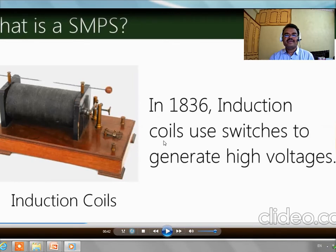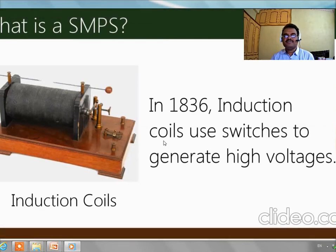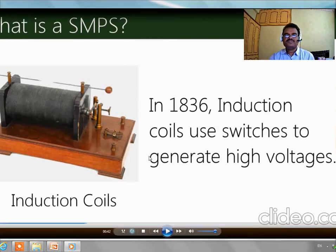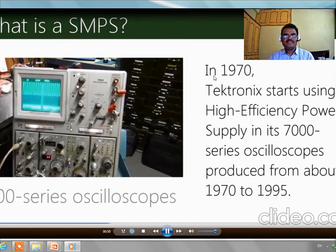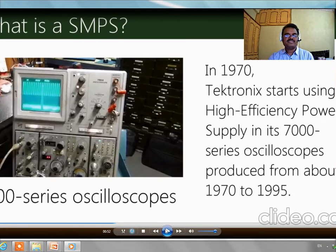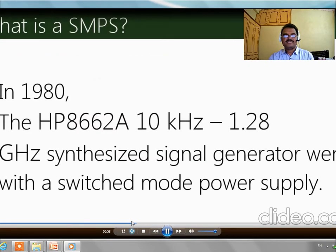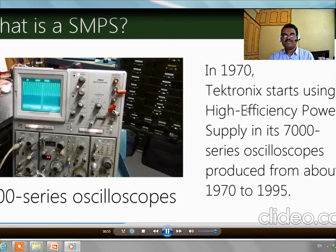In 1836, induction coils used switches to generate high voltage — that is the basic thing behind SMPS. In 1970, Tektronix started using high efficiency power supply in its 7000 series oscilloscopes produced from about 1970 to 1995. We can see the oscilloscope picture here — this high efficiency power supply is nothing but an early form of SMPS.